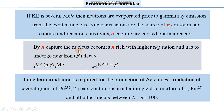By neutron capture, the nucleus becomes neutron rich with a higher neutron-to-proton ratio. Whenever the neutron-to-proton ratio becomes higher, we do not want to keep it arbitrarily high — rather we keep it within the limit of stability. When this ratio is sufficiently close to the optimum value, the nucleus undergoes beta decay.